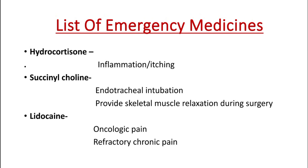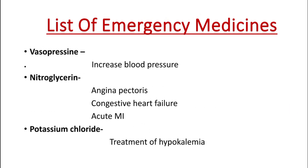Next is vasopressin. It acts as an antidiuretic hormone and helps to increase blood pressure. It is used in hypotensive patients or patients with low blood pressure.